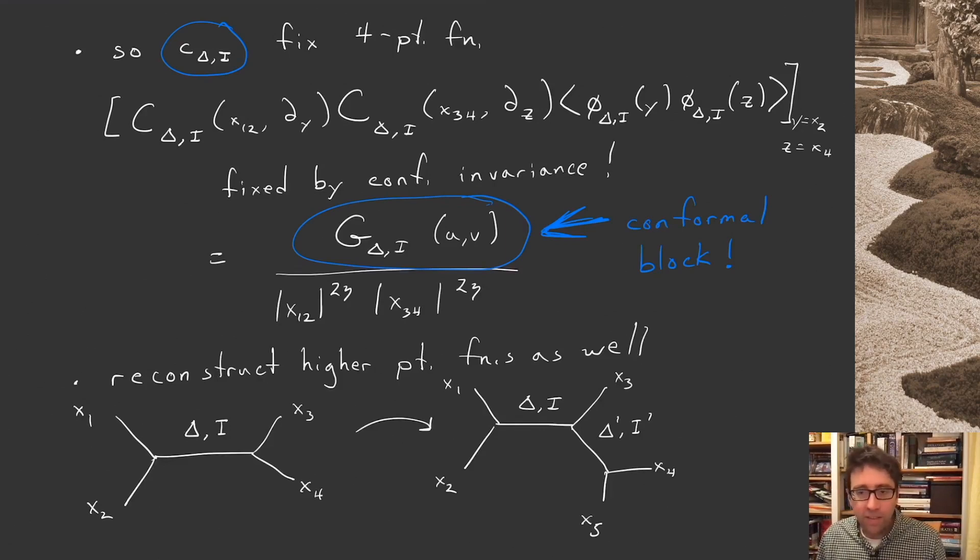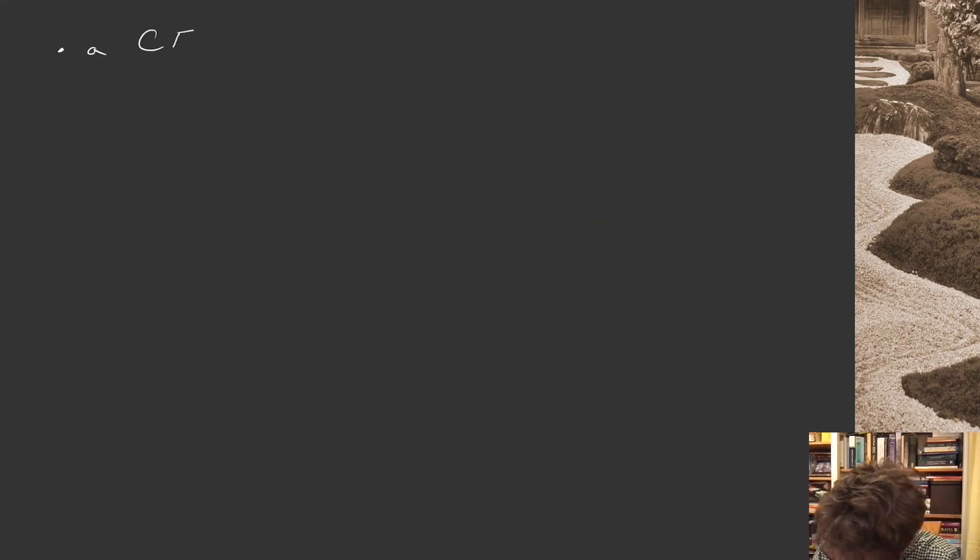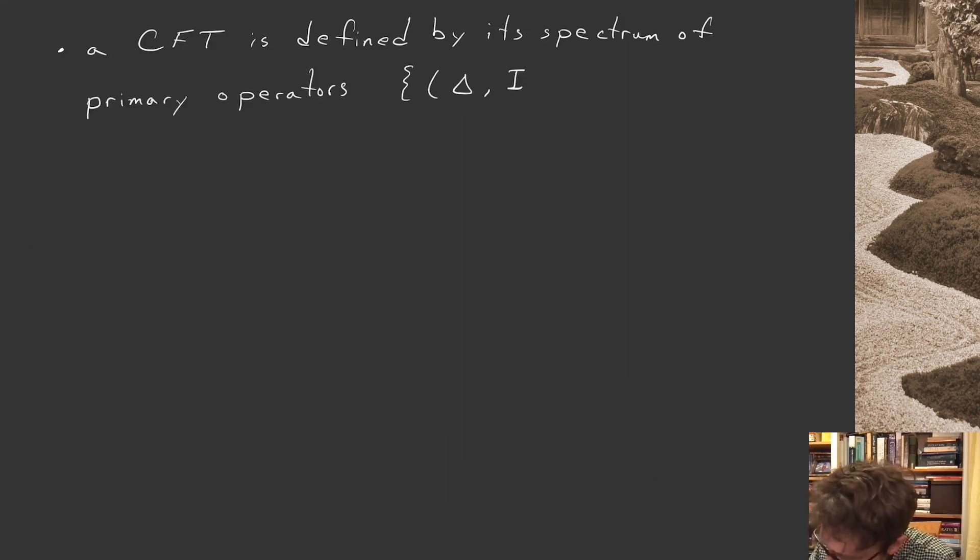So the data of the CFT is encoded in the operator spectrum, the set of allowed deltas and i's, along with these three-point functions, these c delta i. That's an important statement, so let's write it down. A CFT is defined by its spectrum of primary operators, just some list of deltas and i, capital i's, Lorentz representations, along with the three-point functions, which are the same as the OPE coefficients, provided the two-point functions are normalized to one. We can call those C_ijk.